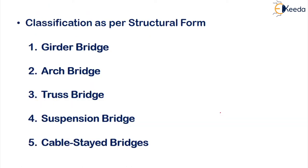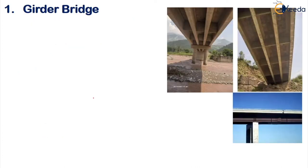To get started: this is the classification as per the structural form. The major ones are the girder bridge, arch bridge, truss bridge, suspension bridge, and cable-stayed bridge. Moving on to the first one — the girder bridge. If you observe, there are girders here in your bridge.